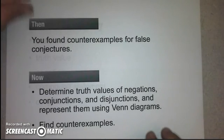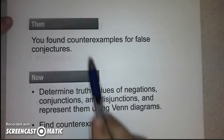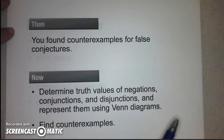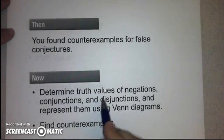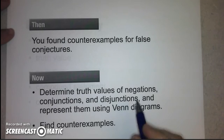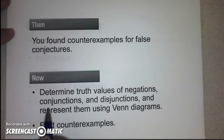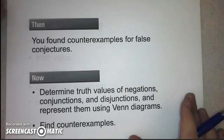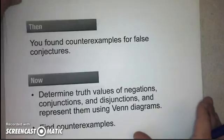So in the past — just the last lesson, actually — we found counterexamples for false conjectures. That was a way for us to prove that a statement was false. Now, we're going to determine truth values of negations, conjunctions, and disjunctions, and represent them using Venn diagrams, and we will still find counterexamples for statements.